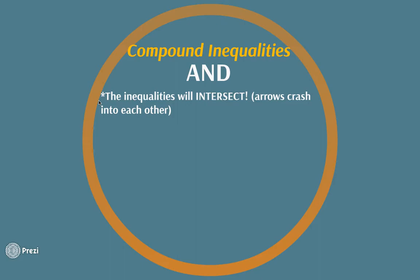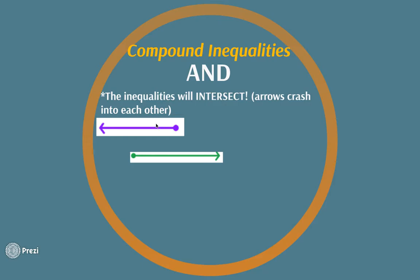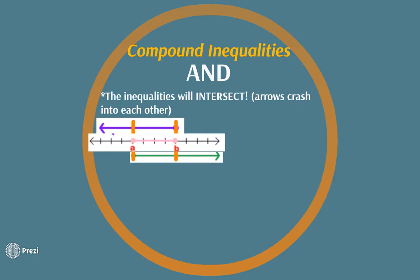When you graph an AND inequality, both arrows will eventually intersect — the arrows will crash into one another. We have one arrow headed this way with a closed bubble, meaning equal to, and another arrow heading in the opposite direction with a little overlap. Think of it like two cars: one goes one way, the other goes the other way, and this is the crash zone. Your final answer on a number line will be the portion in between where the two arrows collide, and since both are closed bubbles, it includes equal to.